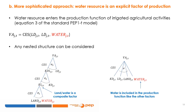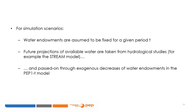The second option is more sophisticated: it consists of explicitly considering water resources as a factor of production included in the production function of irrigated agricultural activities — equation 3 of the standard PEP1T model. Any nested structure can be considered; water can be included like other factors or combined with land as a composite factor. For designing scenarios, it can be assumed there are fixed water endowments for a given period T. These endowments are changed over the simulation period by using future projections of available surface and groundwater. Such forecasts can be taken from hydrological studies, for example the STREAM model, and passed to the PEP1T model through exogenous decreases of water endowments at every period.